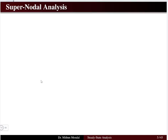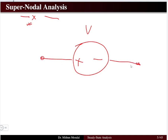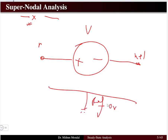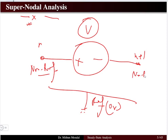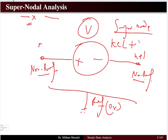We have understood nodal analysis. Next is super nodal analysis. Super nodal analysis applies when you have one voltage source between two non-reference nodes. The reference node is at 0 volts. If a voltage source is between two non-reference nodes, we treat it as a super node problem, which requires a combination of KCL and KVL to solve the circuit.